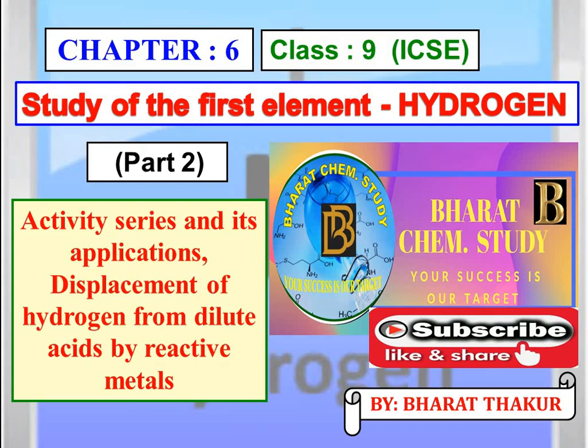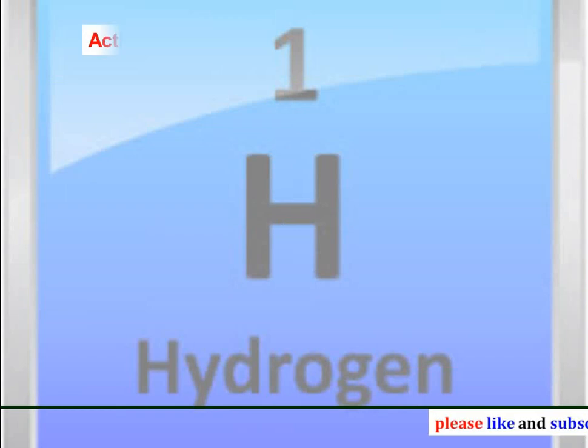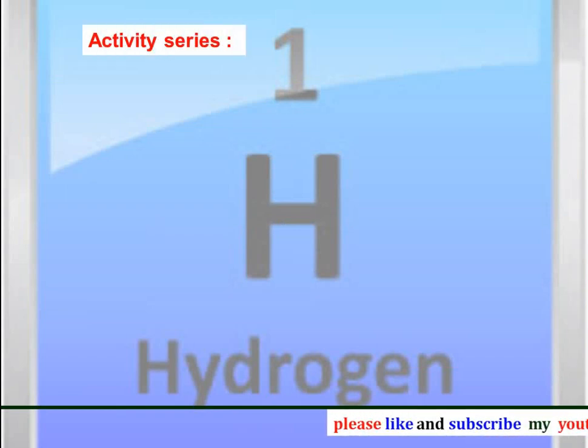Welcome students to my YouTube channel Bharat Camp Study. Today we are going to study about chapter 6, the study of the first element hydrogen for the ninth standard of ICSE board. In this video part 2, we are going to study about activity series and its application: displacement of hydrogen from dilute acids by reactive metals with examples. Let's start with the video.